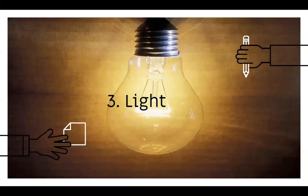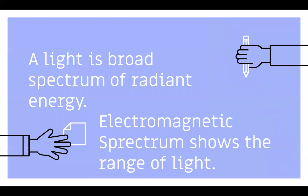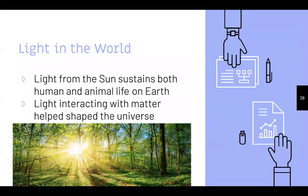Third topic: light. Light is a broad spectrum of radiant energy — the electromagnetic spectrum shows the range of light. Light comes from the sun and sustains both human and animal life on Earth. You may have heard of photosynthesis — that's how plants produce their food, getting light from the sun to create glucose and survive. Light interacting with matter helps shape the universe; it forms forests, provides humans with oxygen, and is the reason humans and animals can survive on Earth.